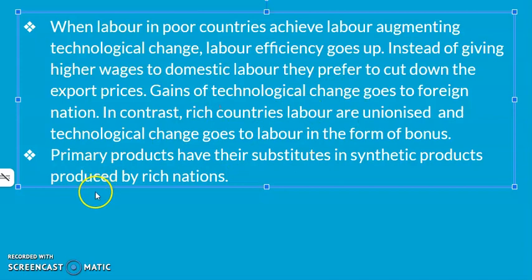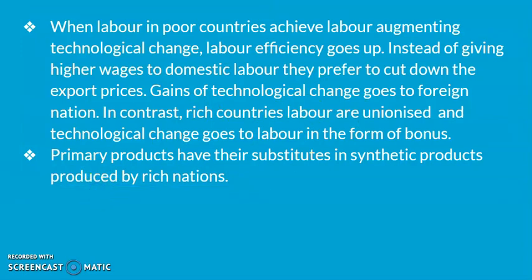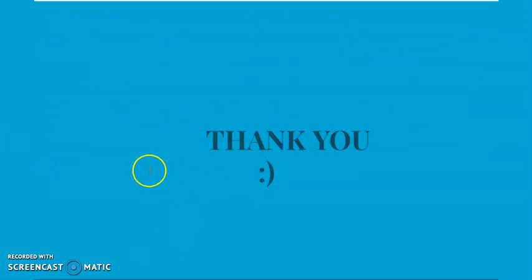The fifth point is that primary products face competition from synthetic substitutes produced by rich nations. For example, a jute mill in Calcutta faces competition not only from jute mills in Bangladesh or Russia, but also from plastic and polyester. So the Indian jute maker faces tough competition from both poor and rich nations. That is all for today, thank you.